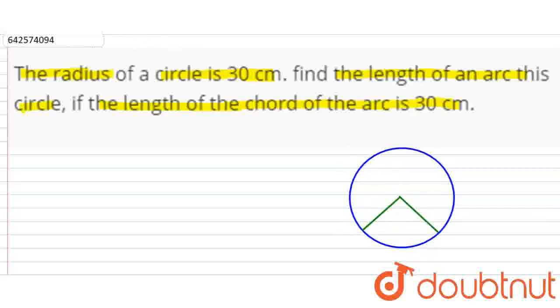Now, this and this length is 30 cm. We have to find the length of arc, means we have to find this length. If the length of the chord of the arc is 30 cm. This length from this point to this point is 30 cm. Suppose that this is O, this is A, this is B. So, this is 30 cm, this is also 30 cm, and this is also 30 cm. And this angle is theta.